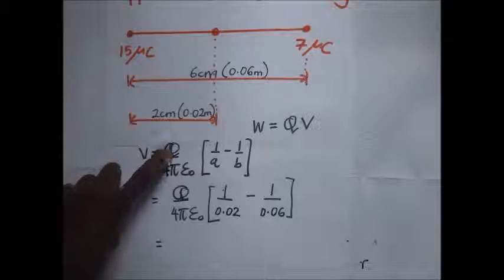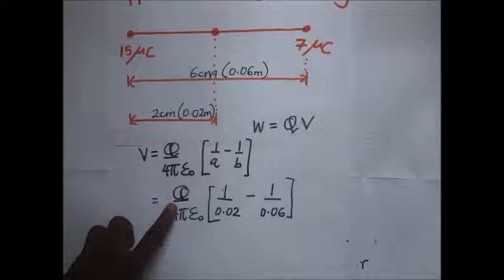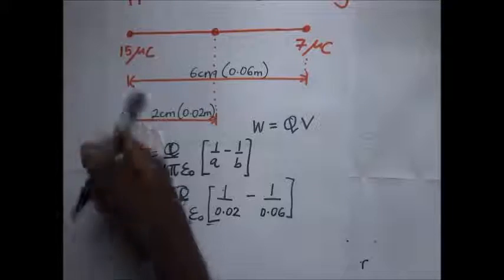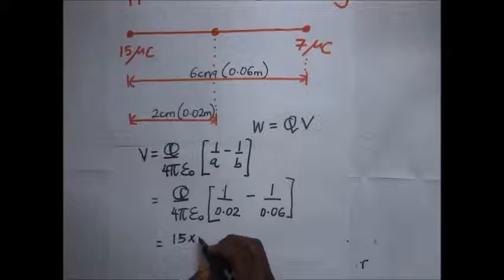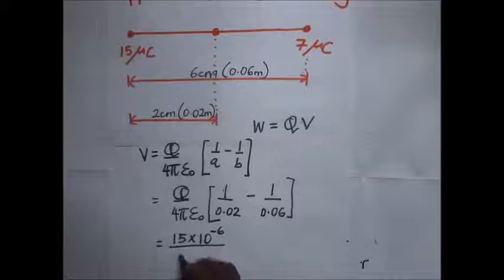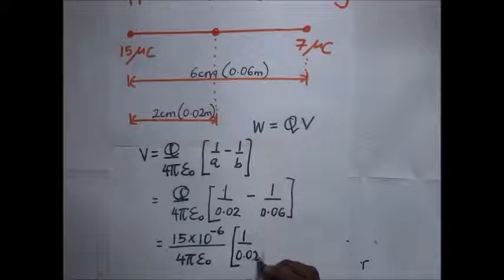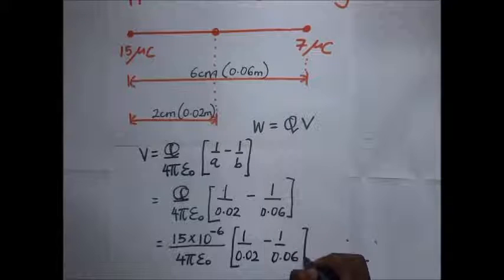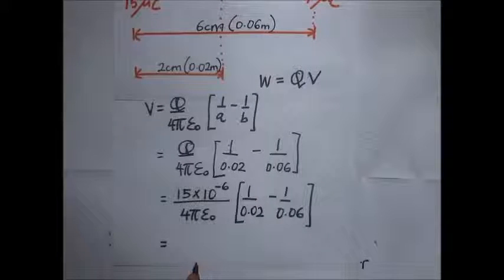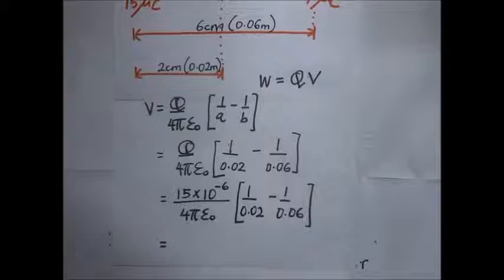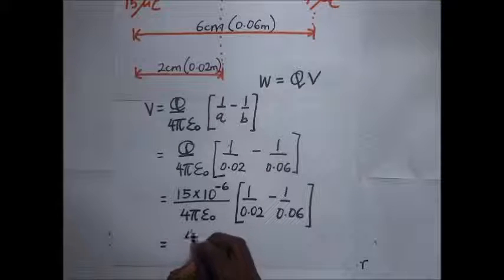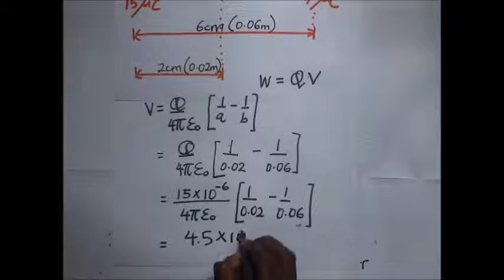Our value of q is the stationary charge, which is 15 microcoulombs. So it is 15 × 10⁻⁶ over 4πε₀, into (1/0.02 − 1/0.06). Multiplying by 9 × 10⁹ for 1/4πε₀, our answer for the potential difference V comes out to 4.5 × 10⁶ volts.